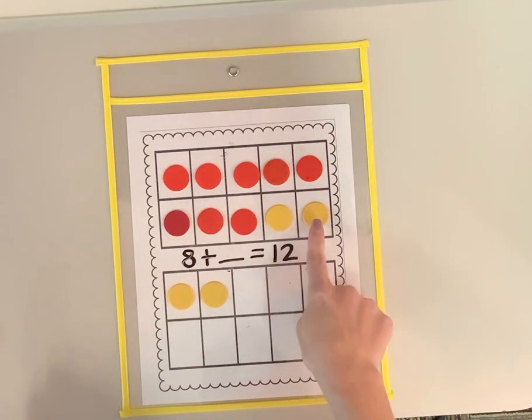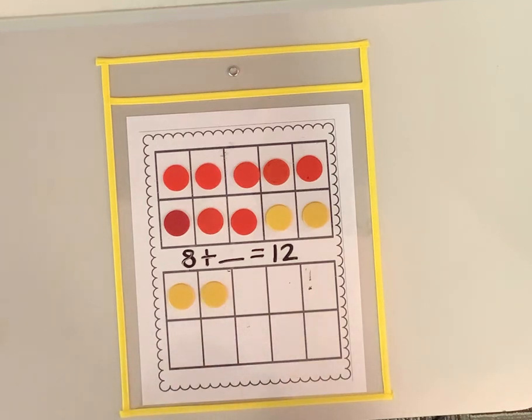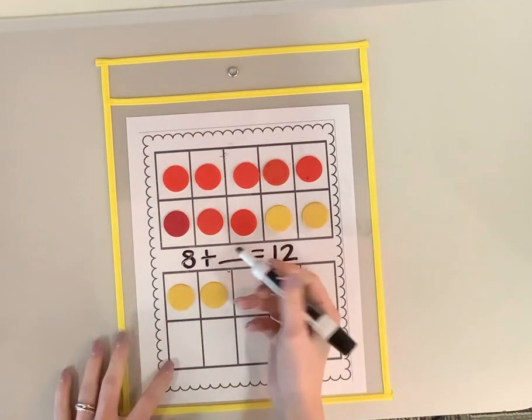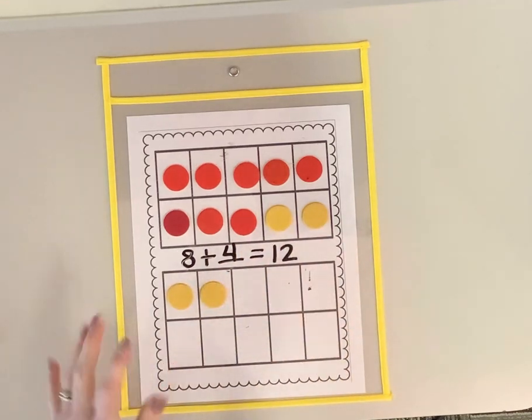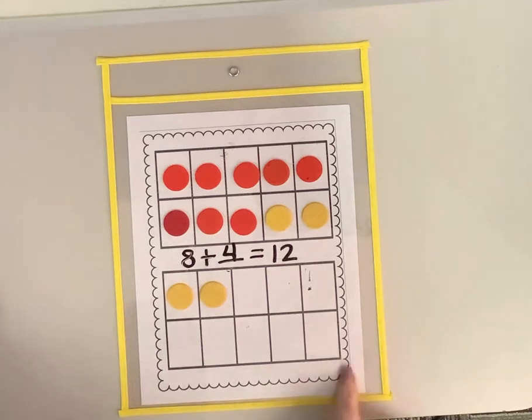Ready? One, two, three, four. Show me with your fingers. That's right. I got four more pieces of paper. One, two, three, four. Eight plus four equals 12. Great job.